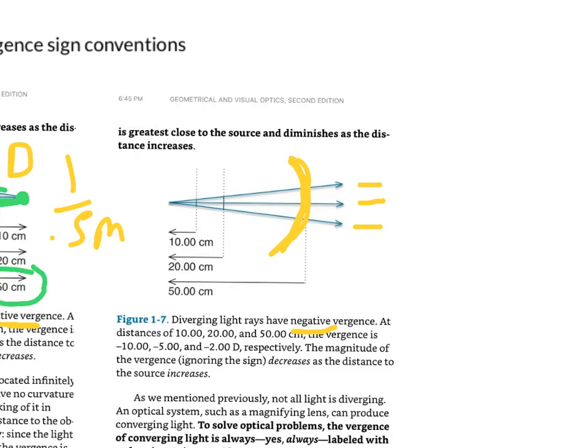So in this case, because it's 50 centimeters away, you do one over 0.5, you get two diopters. And because it's diverging light, you have a negative vergence, so you have minus two diopters.